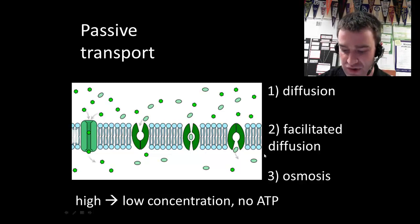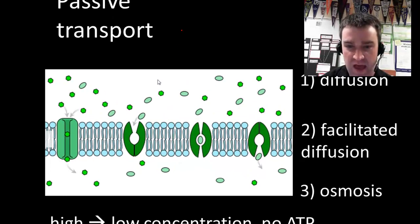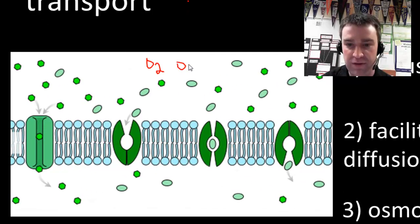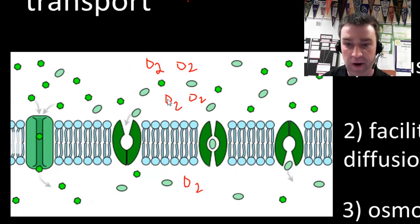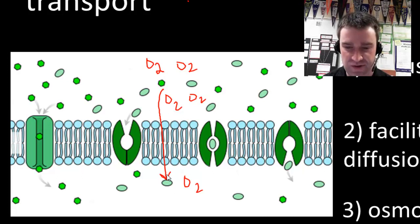Simple diffusion is when particles move from high to low concentration through the phospholipids themselves. This would have to be some kind of non-polar particle. For example, oxygen can diffuse right through the phospholipids, and if it's going from high to low concentration, we say it's going through simple diffusion.